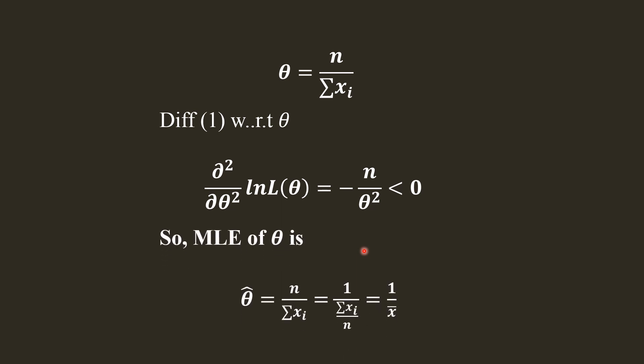Hence the MLE of θ, the parameter of exponential distribution, is θ̂ = n/Σxi. We can write it as 1 over (Σxi/n). Σxi/n is x̄, so we can say that θ̂ equals 1/x̄.